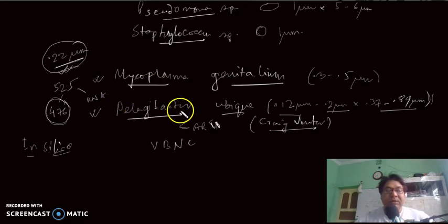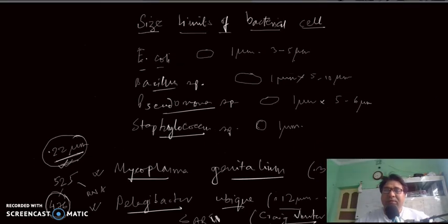Pelagibacter ubique has about 1240 genes, which is quite smaller than E.coli which has about 4000 genes. You can imagine such a small bacteria like E.coli has 4000 genes, and human beings, which are such complex organisms, have merely about 20,000 to 22,000 genes. This is the paradox that has been talked about in some other lectures.